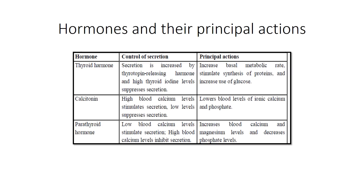Moving to other hormones and their principal actions: thyroid hormone, calcitonin — these are basically from the thyroid gland — and parathyroid hormone. We will look at control of secretion and the various actions caused by them. Thyroid hormone causes an increase in the basal metabolic rate.